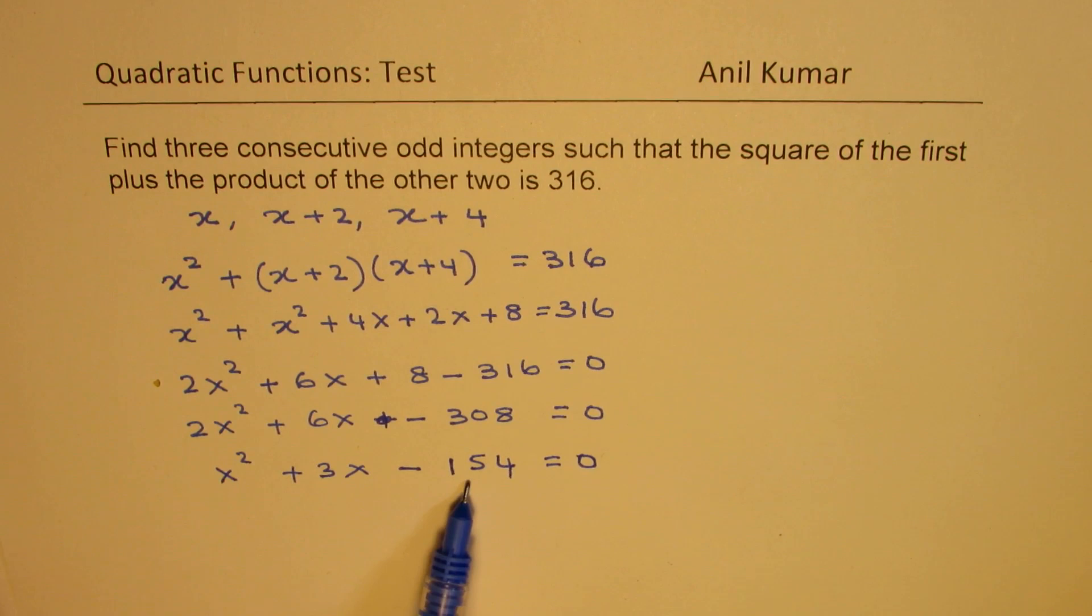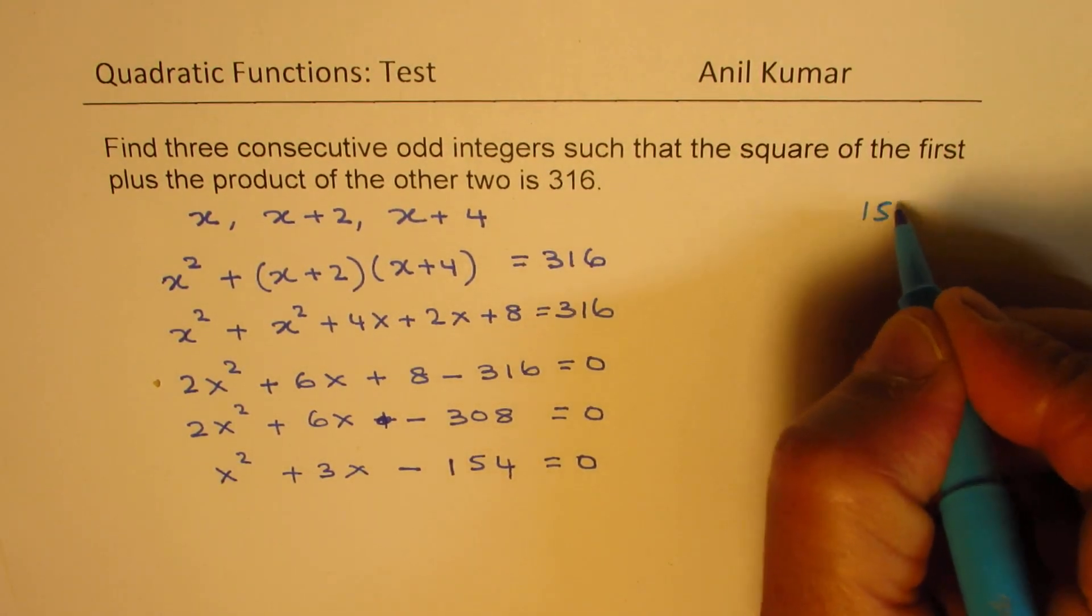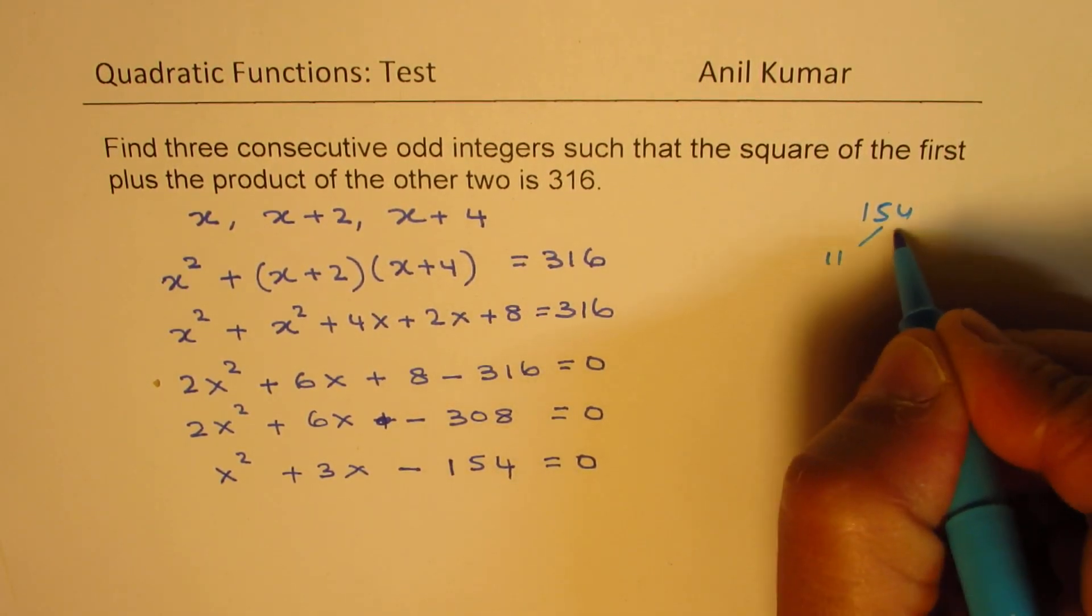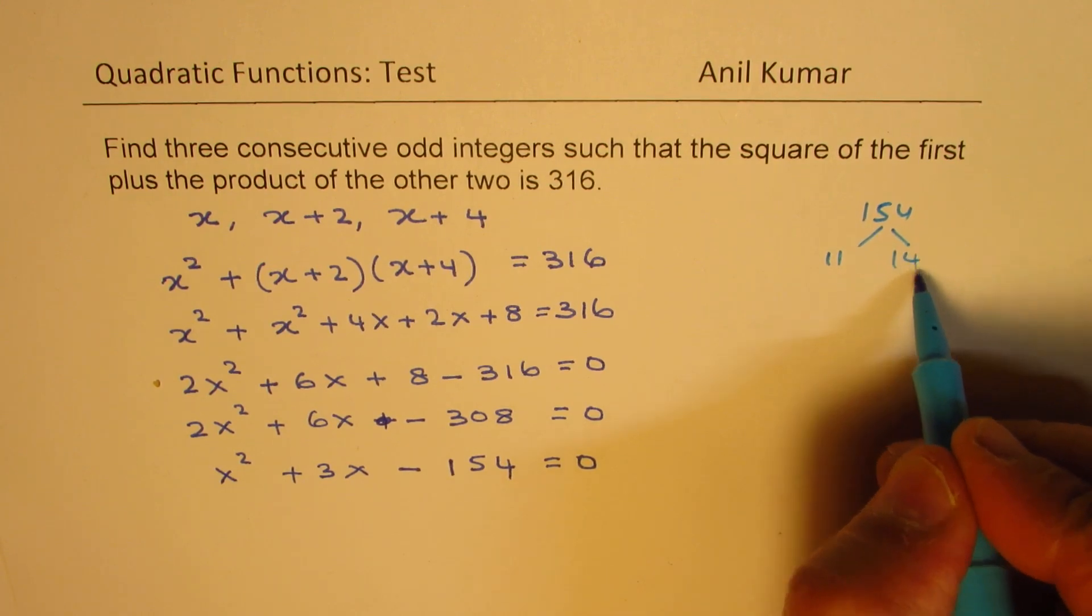Now we are looking for product of 154 and sum of 3. 154—1 plus 4 is 5, so that can be divided by 11. So 154 could be written as 11 times 14.